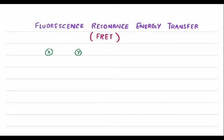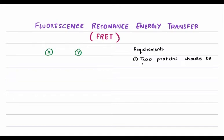Before we move on, there are certain requirements for FRET. The first basic requirement is that the two proteins we're interested in need to be tagged with different fluorophores. Fluorophores are molecules that, upon excitation with a certain wavelength of light, can emit a certain wavelength of light.